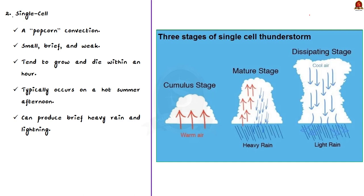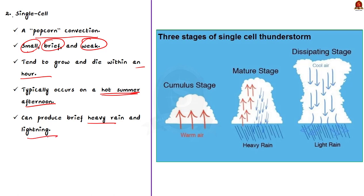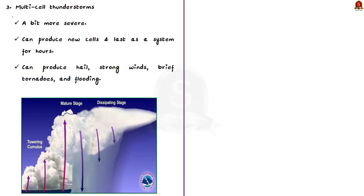Let us take single-cell and multi-cell thunderstorms. A single-cell thunderstorm is also known as a popcorn convection. These storms are small, brief, and very weak. They tend to grow and die within an hour. You will typically see these storms on a hot summer afternoon. But don't be fooled — single-cell thunderstorms can produce brief heavy rain and lightning. On the other hand, multi-cell thunderstorms can be a bit more severe. As your typical thunderstorm, multi-cell thunderstorms can produce new cells and therefore last as a system for hours. They can also produce hail, strong winds, brief tornadoes, and flooding.